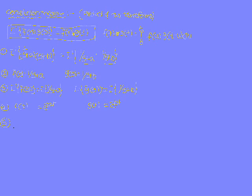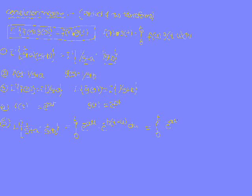Now apply the convolution theorem. L inverse of [1/(s + a)] × [1/(s + b)] equals the integral from 0 to t of f(u) × g(t − u) du, which is the integral from 0 to t of e^(−au) × e^(−b(t − u)) du. Expanding, this becomes the integral from 0 to t of e^(−au) × e^(−bt) × e^(bu) du.